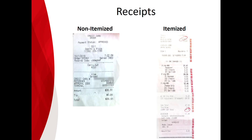Every student reimbursement request must be submitted along with an itemized receipt. An itemized receipt is similar to a receipt you would get at a grocery store — it's going to list the details of everything you purchased.